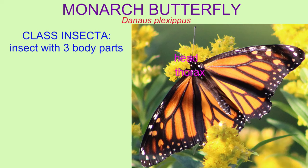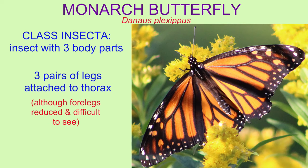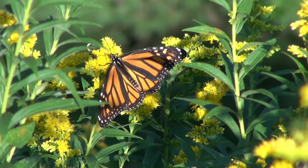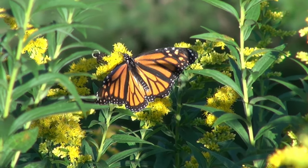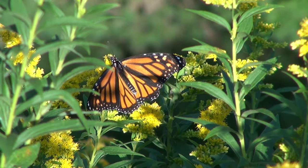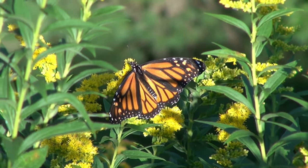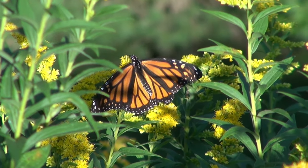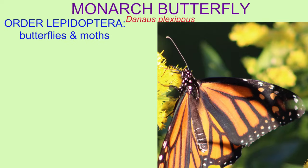Monarch butterflies are insects. As adults, they have three body parts: a head, thorax, and abdomen. They have three pairs of legs attached to the thorax, although four of the legs are reduced and difficult to see. They have other insect features such as compound eyes and antennae.